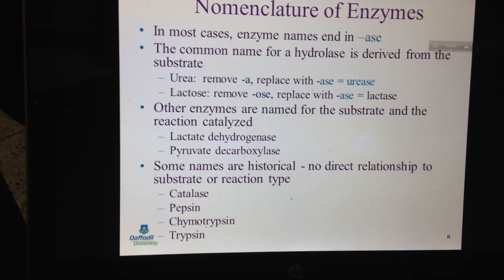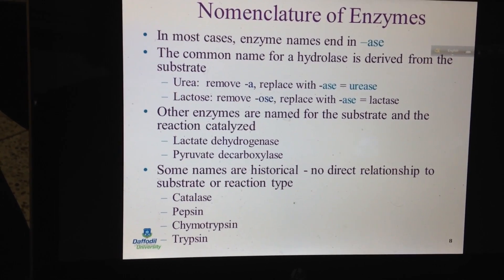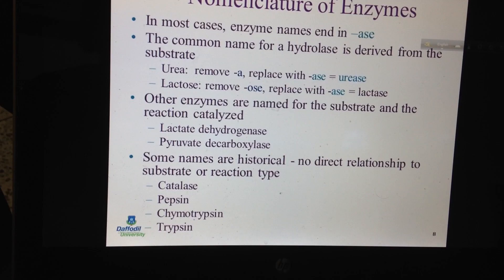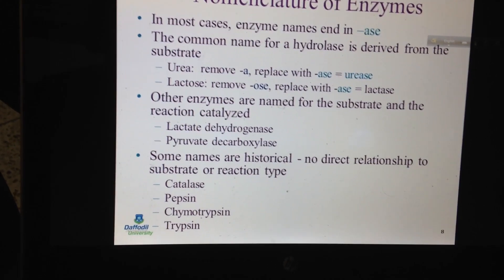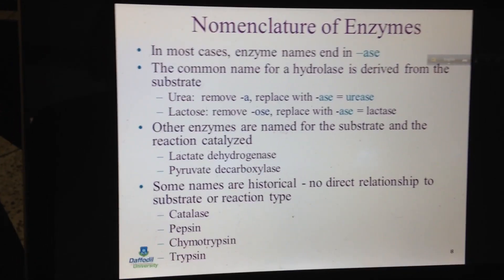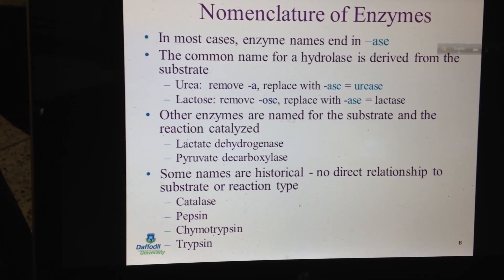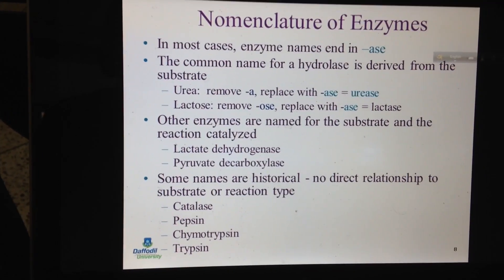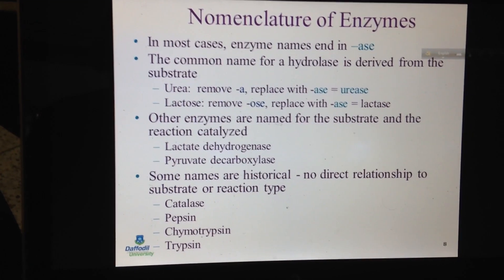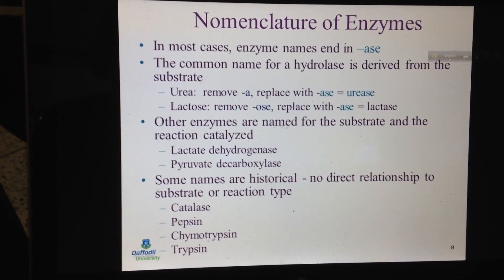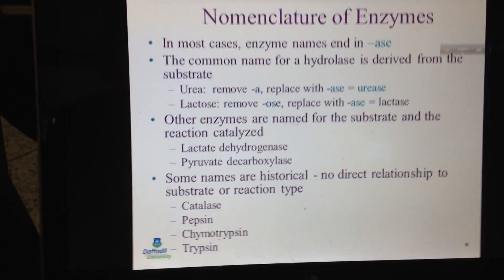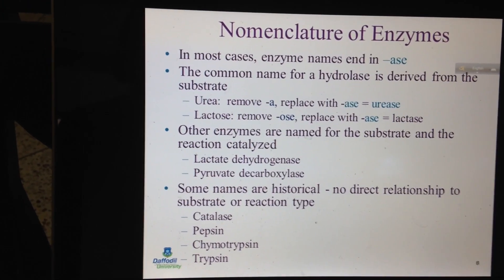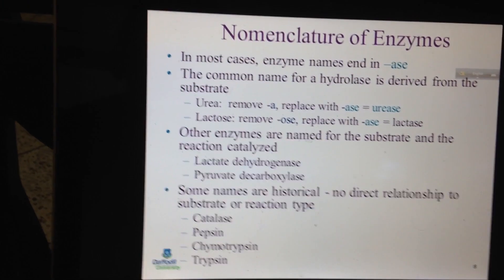Some enzymes have names with no direct relationship to their function, such as pepsin, chymotrypsin, and trypsin. Their names are sometimes based on how they are produced or the area of production. However, their work is specific even if not reflected in the name. For example, trypsin is used to cleave the bond between two different amino acids.